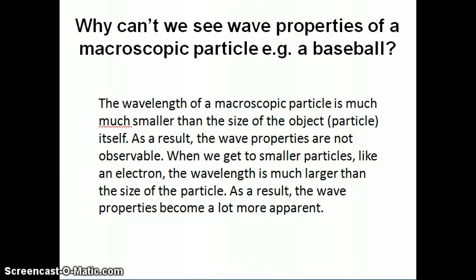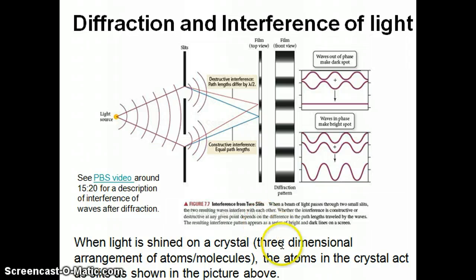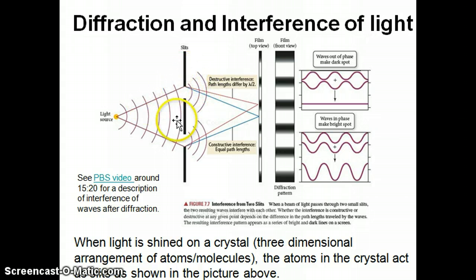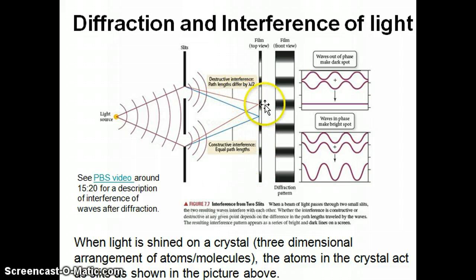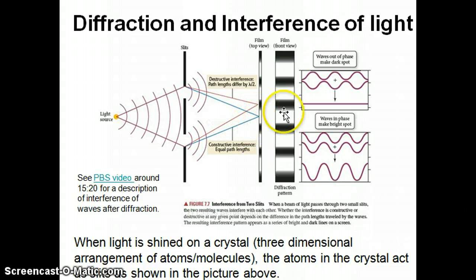As a quick reminder, diffraction is the property of light where if you shine light on a structure that has two slits, the light goes in as a wave and these waves can interfere with each other either constructively or destructively. On a film or detector that captures the light, in parts where there is destructive interference you see no light — a black color — and in parts where there is constructive interference you see a bright pattern of light. So you get these alternating patterns of bright and dark lines as a result of constructive and destructive interference.